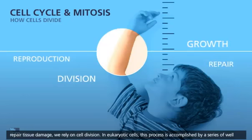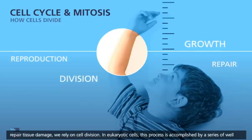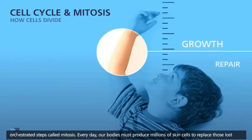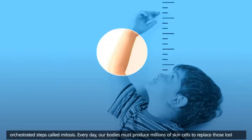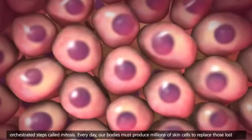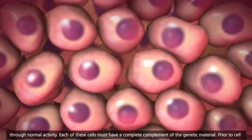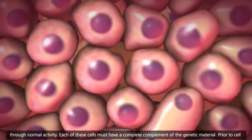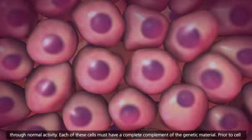In eukaryotic cells, this process is accomplished by a series of well-orchestrated steps called mitosis. Every day our bodies must produce millions of skin cells to replace those lost through normal activity. Each of these cells must have a complete complement of the genetic material.